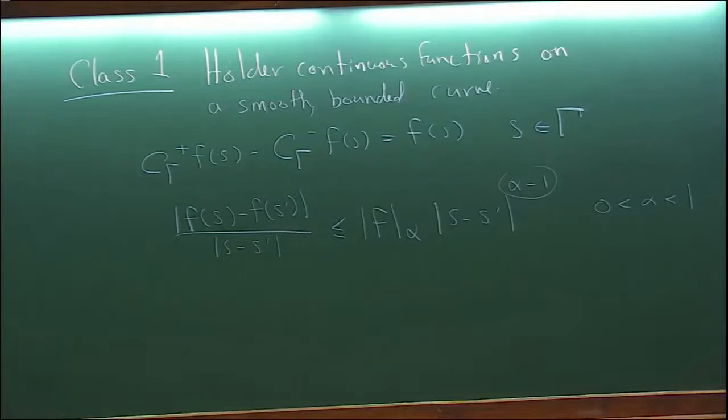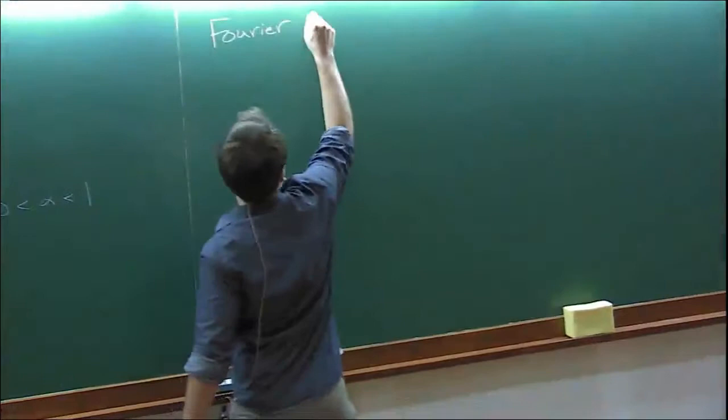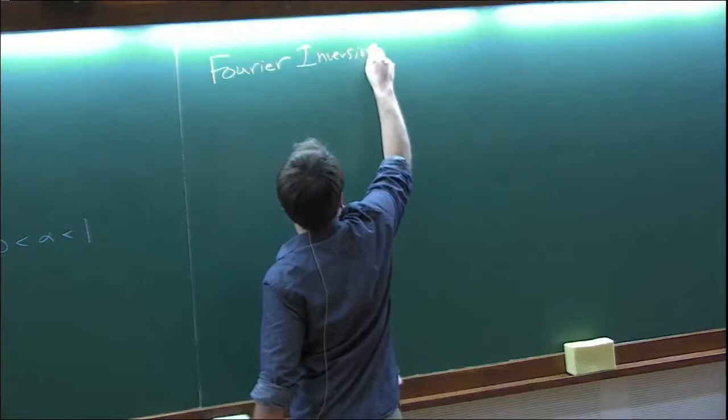Because this is now integrable for alpha positive, you can make sense of these limits. That's morally why the Hölder condition comes into the Cauchy integral boundary value. Now I want to take a little bit of a tangent and talk about the Fourier inversion formula.